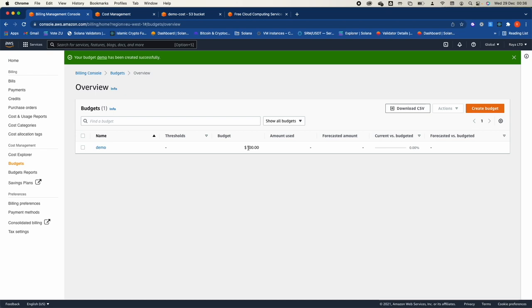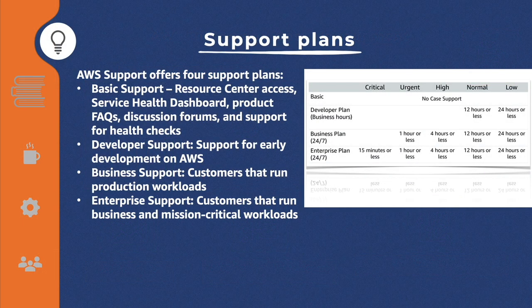There are four support plans you need to understand for the exam. Basic support is a free plan included when you join the AWS management console. Developer support provides additional guidance. Business support comes with its own technical support team. Enterprise support is for running mission-critical workloads. That covers Module 2 — let us move on.